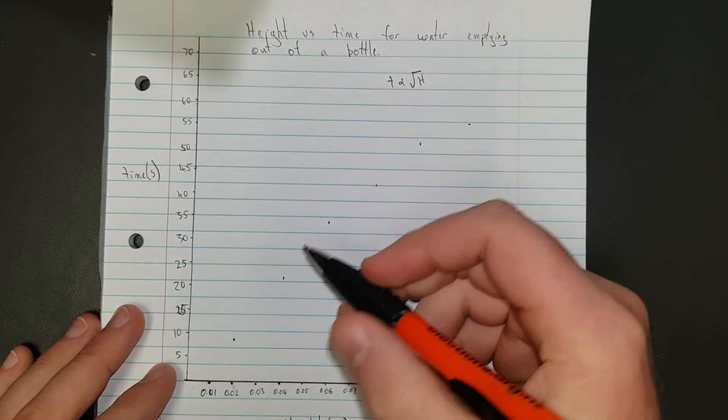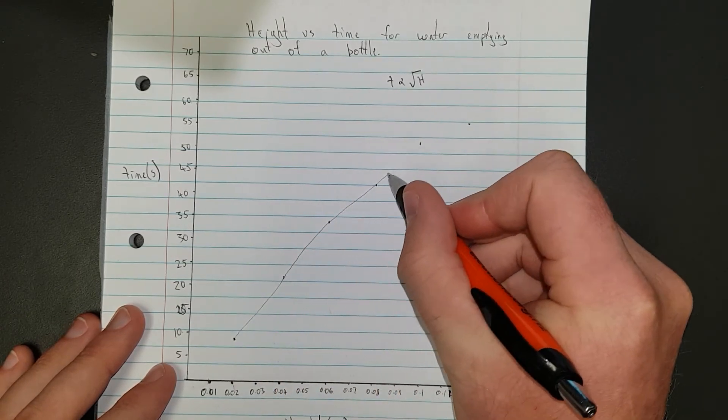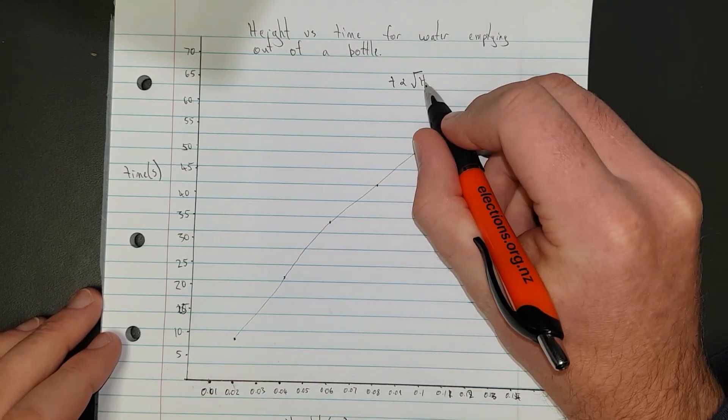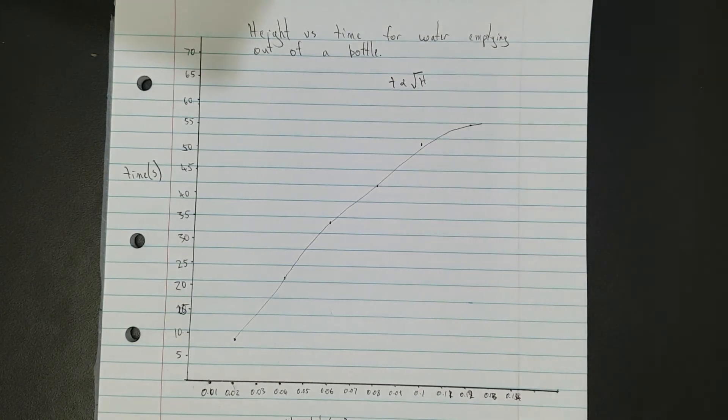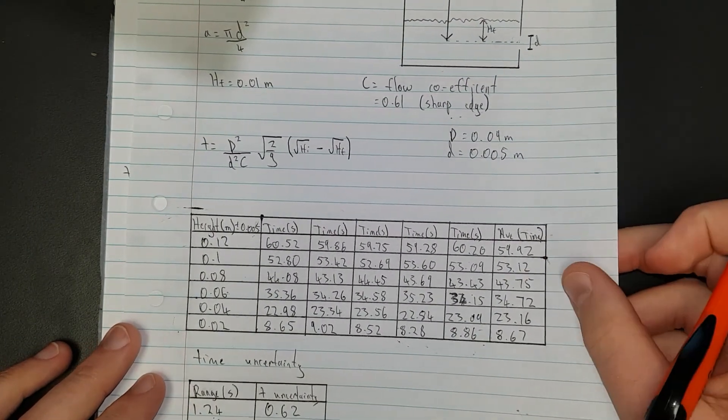You can generally see the curve. I'm going to put a rough line of best fit in, and you can see it does curve off. Time is proportional to square root h, and from now we can start processing our raw data into a straight line graph.